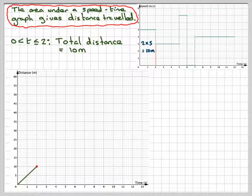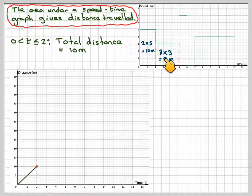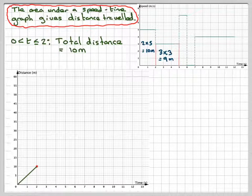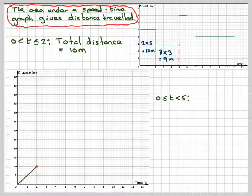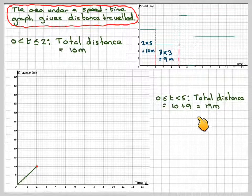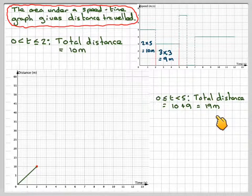In the next part here, we're going to go 3 times 3, which is 9 metres. But we need to remember the total distance travelled is going to be the 10 plus the 9, which equals 19.